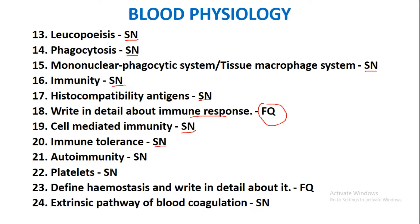Cell-mediated immune response will also be asked as a short note. Immune tolerance as a short note, autoimmunity as a short note, platelets as a short note. Define hemostasis and write in detail about its mechanism — this is a full question and the most important full question in this section.